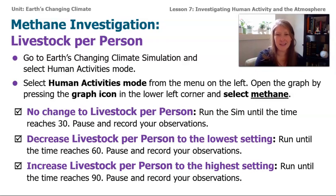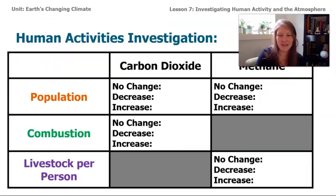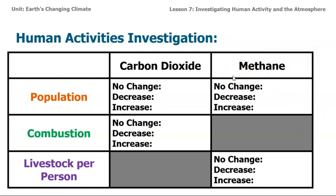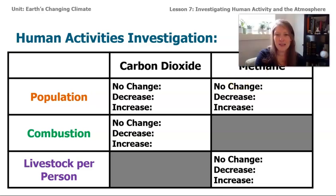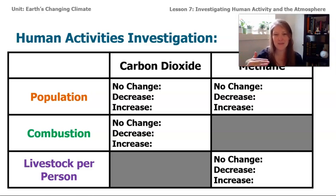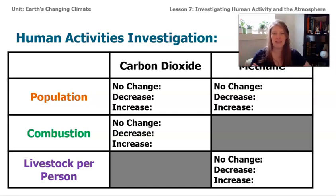These are a lot of directions and they're kind of complicated, so there's a data table to help you keep track of everything. The first column has the three different variables — population, combustion, and livestock per person. The next two columns have carbon dioxide and methane, because we want to track what's happening with each variable for both gases. The directions say: first no change, then decrease, then increase. Once we're done collecting all this data, we'll have a better idea of how human activities affect these gases in Earth's atmosphere.